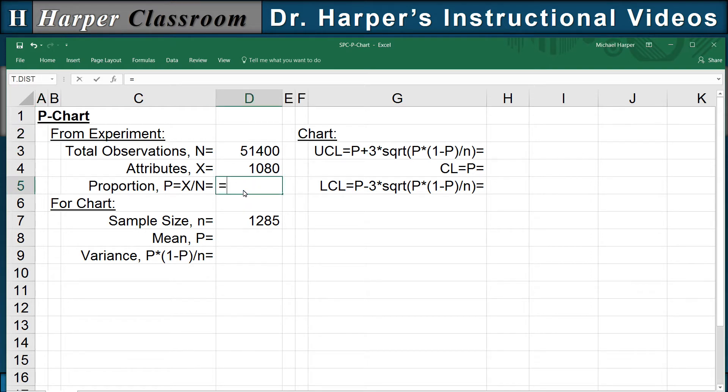First, for the proportion, all we do is take the attributes and divide by the total number of observations in the experiment. And there's our parameter from our experiment. The mean is just our parameter.